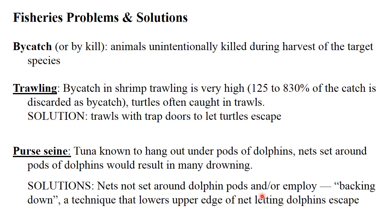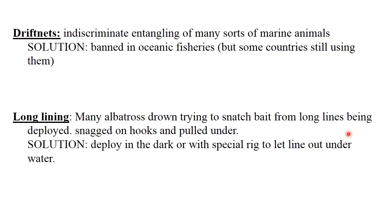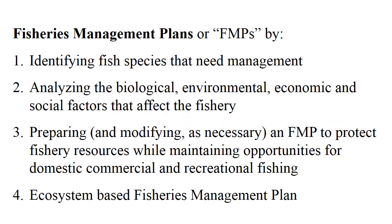Cutting the upper edge of the net also helps dolphins escape. Drift net is also a bad net type with small mesh size, capturing many sorts of marine animals along with fish; it has been largely banned in ocean fisheries, but some countries still use it. For longline fishing, many albatross birds come and get caught on the hooks. The solution is to deploy longlines in the dark when albatrosses are inactive, and to try to set the line underwater — these are solutions for longline bycatch.